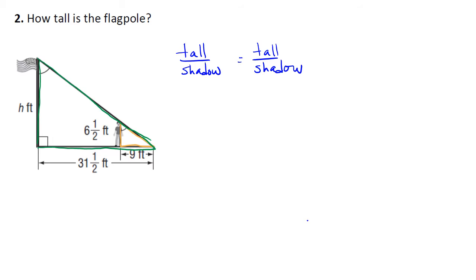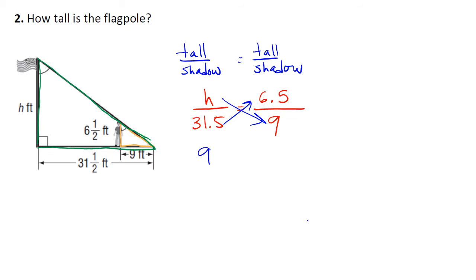So let's start — the flagpole height is h, and the shadow this time is 31.5. I'll use decimals to make it easy. Now let's do the height of our little guy here — he's 6.5 feet tall, which is pretty tall. The shadow he casts is 9 feet. So now let's go ahead and cross multiply. We have 9h equal to 31.5 times 6.5, giving us 204.75.